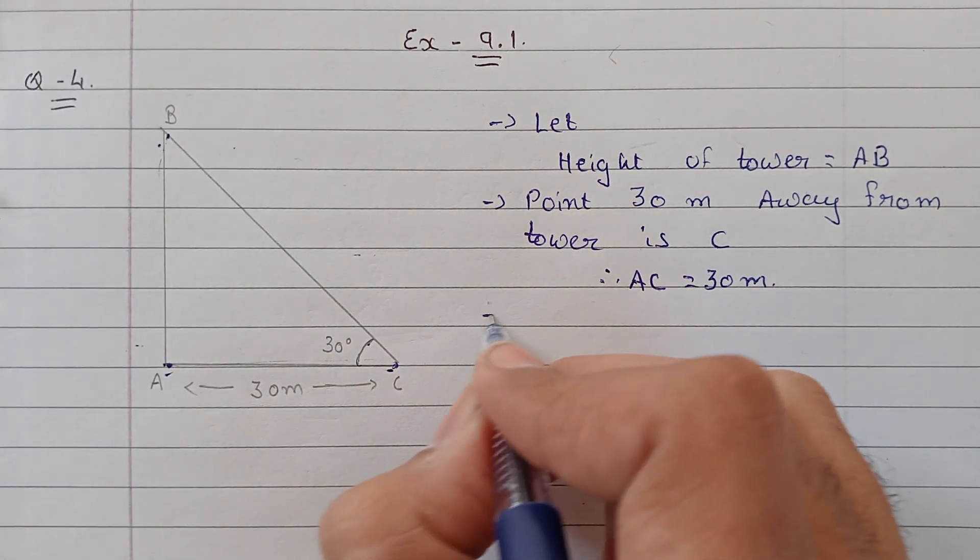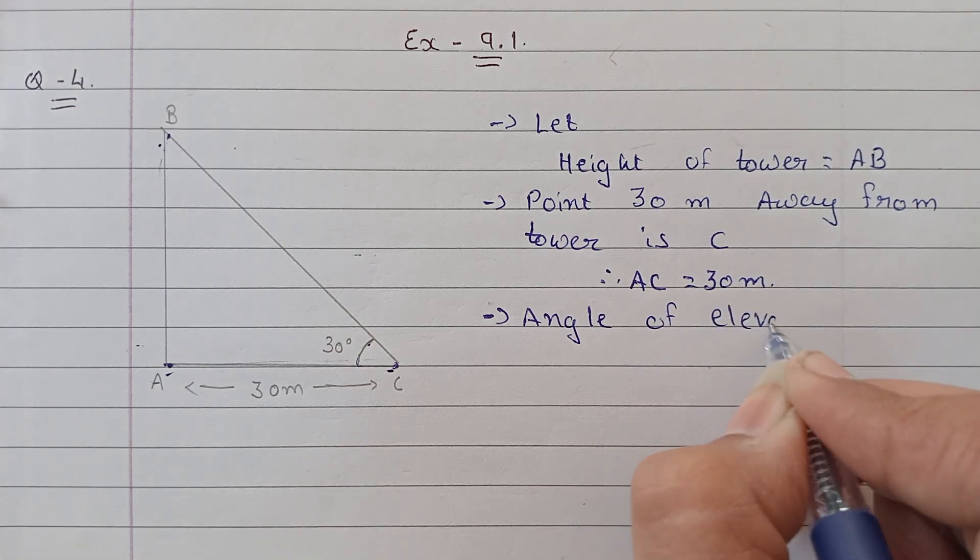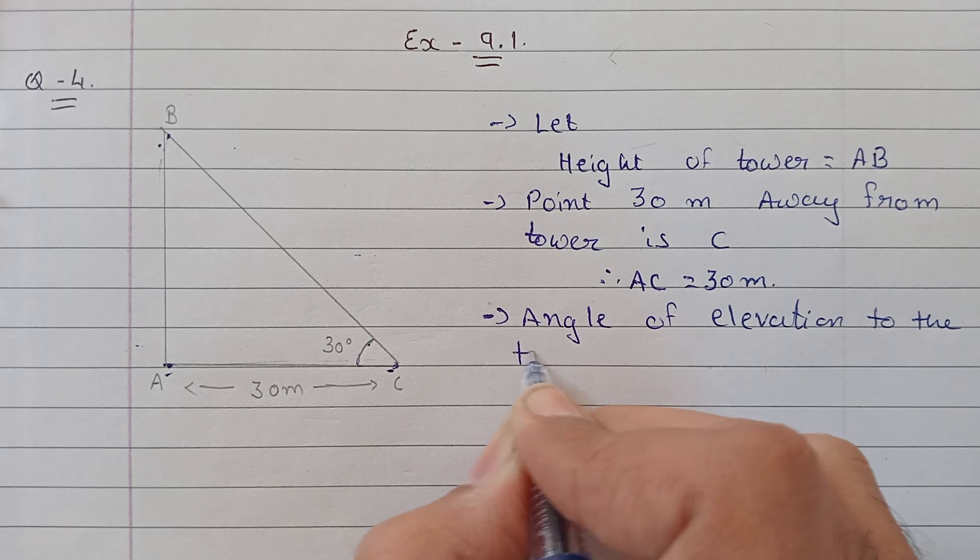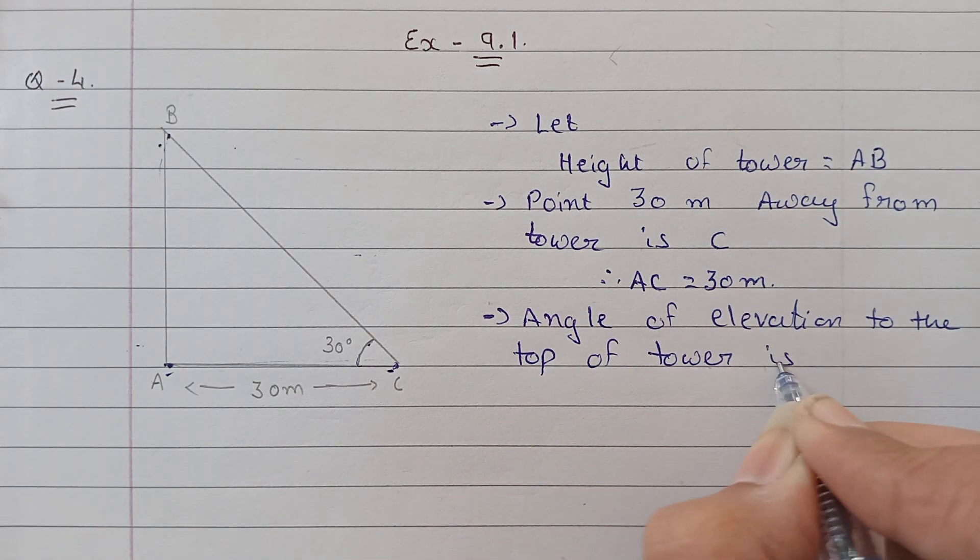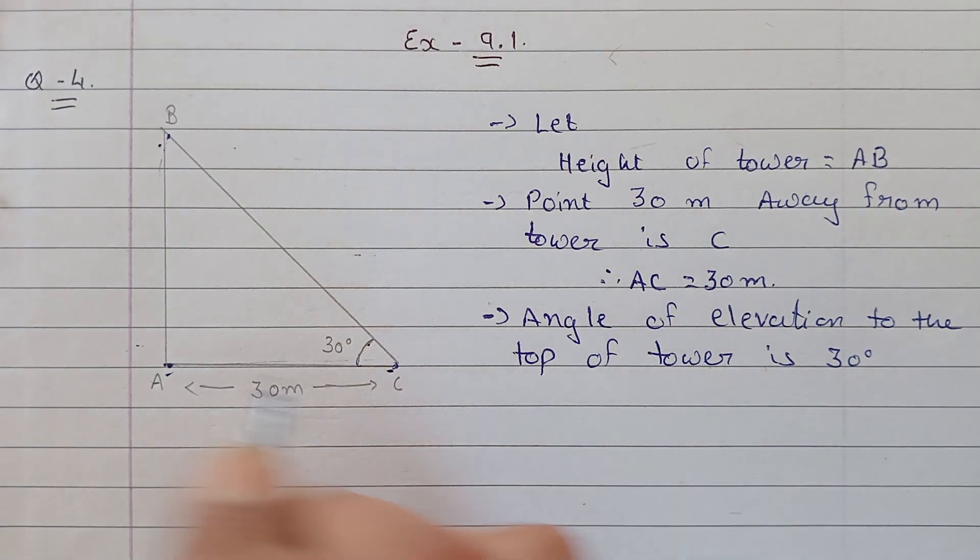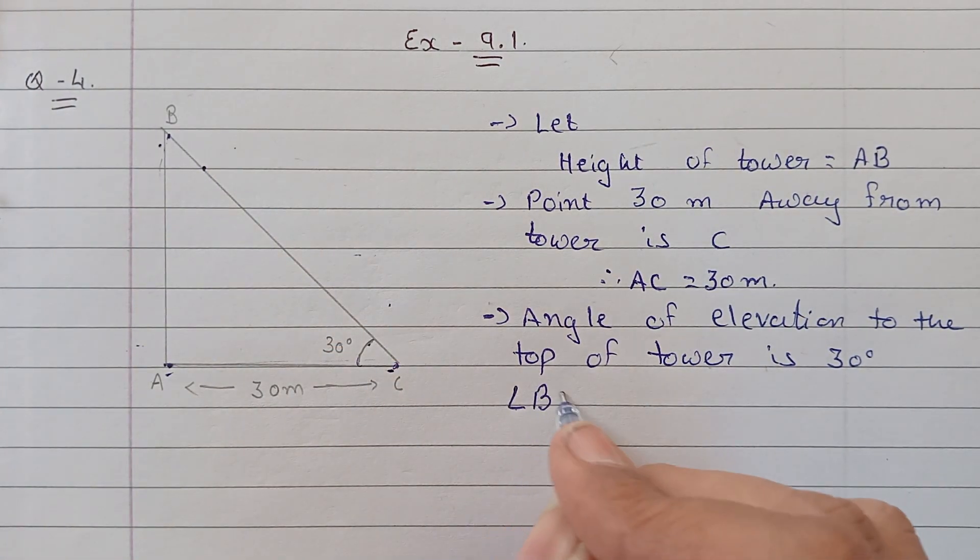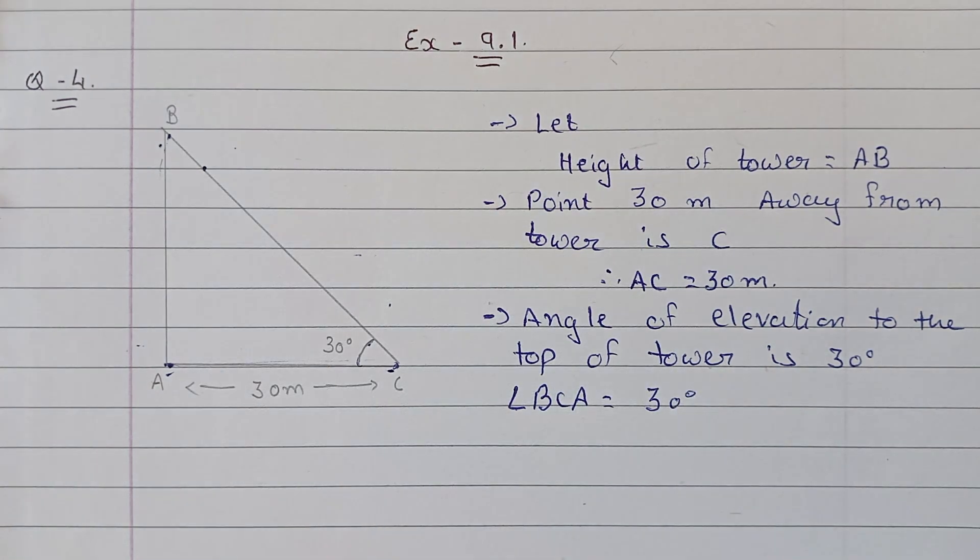degrees. The angle of elevation to the top of tower is 30 degrees. Angle BCA is equal to 30 degrees. Now we need to find